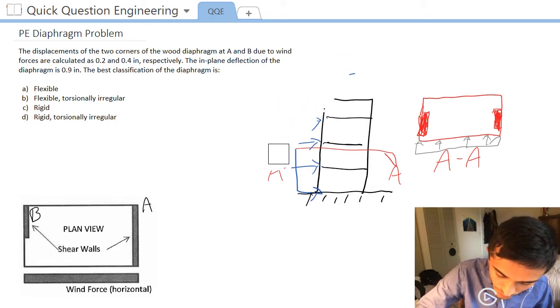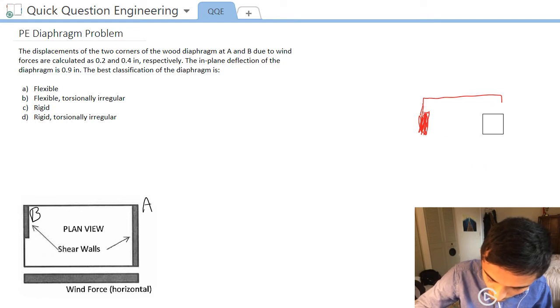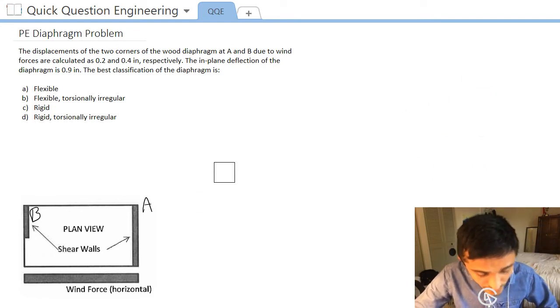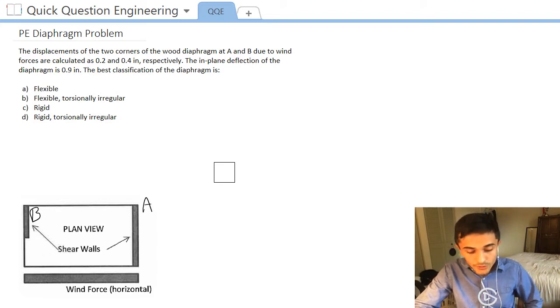Now that we know what a diaphragm is, let's see what our problem asks. The problem says the displacements of the two corners of the wood diaphragm at A and B due to wind forces are calculated as 0.2 and 0.4 inches, respectively. The in-plane deflection of the diaphragm is 0.9 inches. The best classification of the diaphragm is either flexible, flexible and torsionally irregular, rigid, or rigid and torsionally irregular.